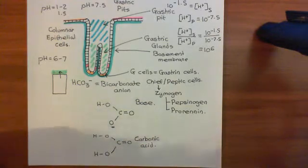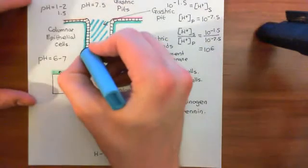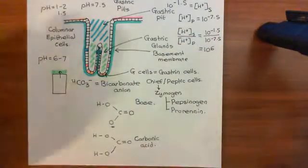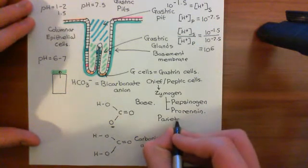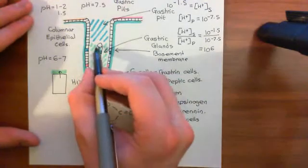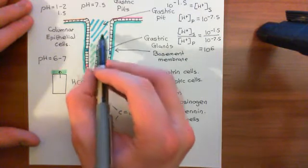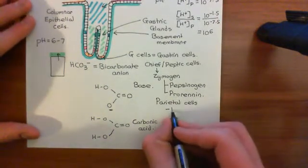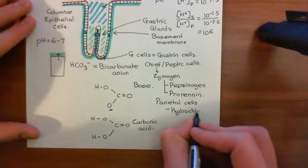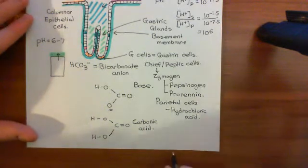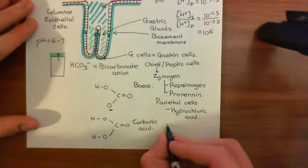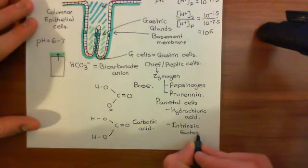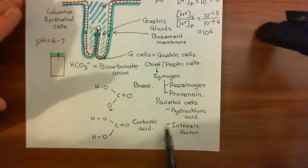The next important cell of the gastric glands is the parietal cell — really the stars of the show, shown here in blue. These are very close to the point where the gastric glands become the gastric pit, near the neck of the gastric glands. Parietal cells firstly secrete hydrochloric acid, making them responsible for the very low pH of the stomach lumen. They also secrete intrinsic factor, which is important in the correct absorption of vitamin B12, also called cobalamin.